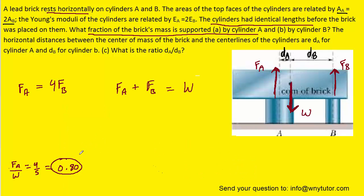Now it's probably obvious that if the fraction of the brick's mass supported by cylinder A is 0.8, then the fraction supported by cylinder B would be 0.2. Of course we can solve for that by referring back to these two equations. FA is 4 times FB, so we substitute, combine like terms, multiply both sides by 1 fifth, and then divide both sides by W. That ratio turns out to be 1 fifth or 0.20, which is the correct answer to part B.